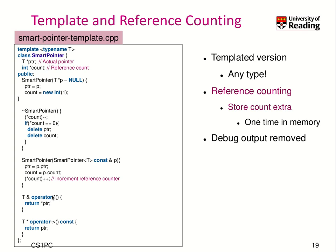We overload our star operator again, returning a reference to a T object. We also overload the arrow operator, which returns a pointer to T. We also overload and allow creating a smart pointer from a previous smart pointer — so a smart pointer can be assigned to another smart pointer, creating copies. This copy constructor assigns this internal pointer to the object from the source smart pointer, assigns the counter to the previous counter, and increases the reference count by 1.